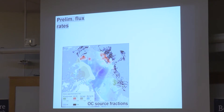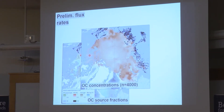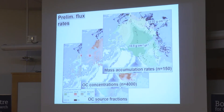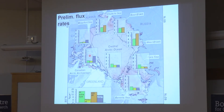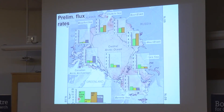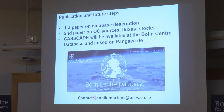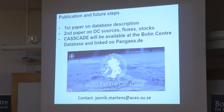We also want to understand the fluxes. Using downcore information in individual cores, coupled with organic carbon concentrations in the sediments and mass accumulation rates, we can understand how much carbon is transported every year. The takeaway message is that permafrost active layer and ice complex deposits are the two dominating sources of terrestrial organic matter in the Arctic Ocean. Future plans for CASCADE include a database paper to be submitted to Earth System Science Data, and a second paper performing source apportionment to provide a big picture of terrestrial organic matter input to the Arctic Ocean. CASCADE will be available on the Bolin Center database.